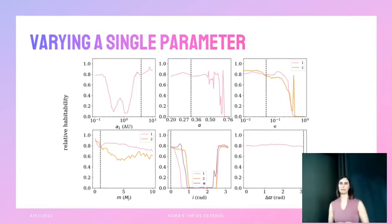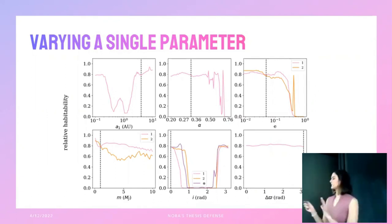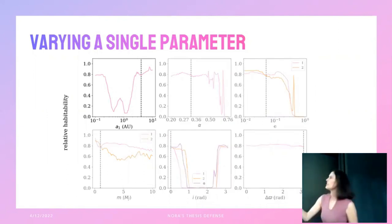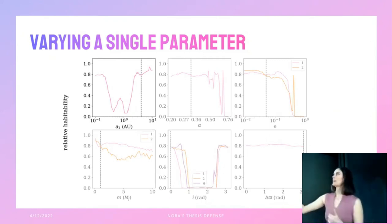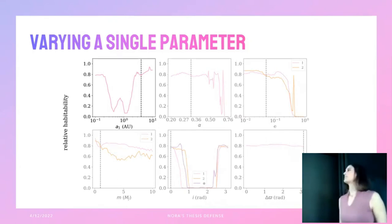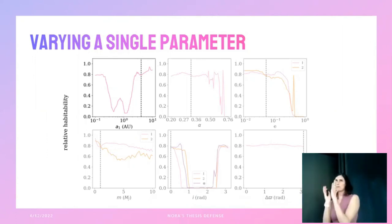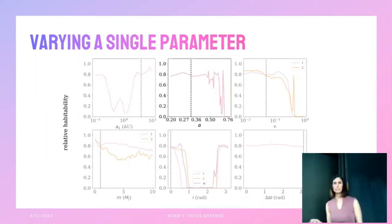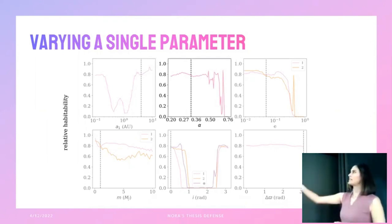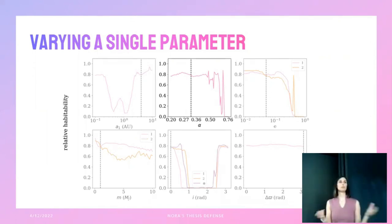For the fiducial systems varying one parameter at a time: the semi-major axis of the inner giant planet — as giants move into the habitable zone, relative habitability drops greatly, with a local maximum where giants are on either side of the habitable zone. For alpha — as alpha increases, planets get closer together and very high alphas are unstable; dips correspond to mean motion resonances. For giant planet eccentricity — very eccentric giants lead to instability, but there's an interesting feature where a secular resonance on the outer giant planet actually protects systems that would otherwise be unstable.